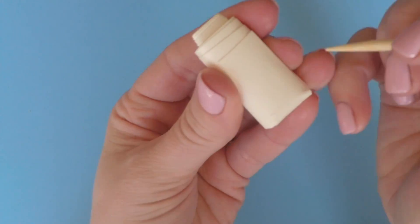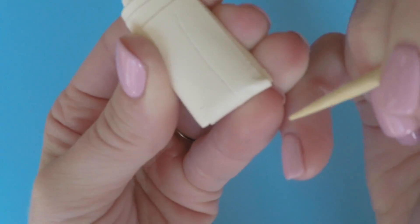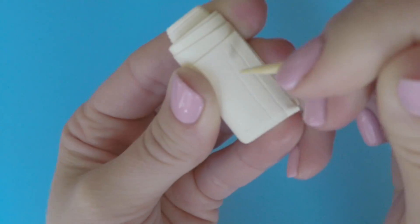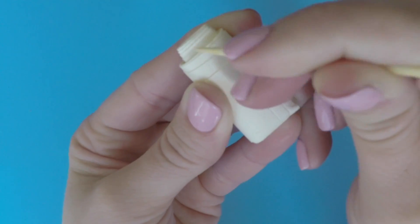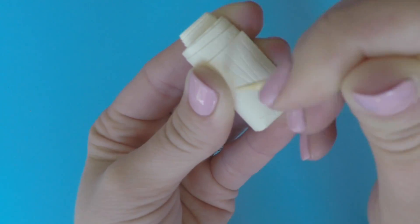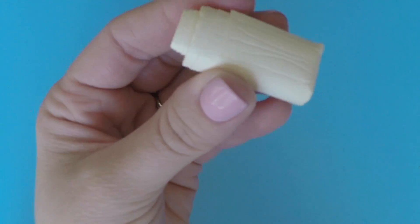And then to make the little indentions for the corn husk, just take your toothpick and apply the lines right in the paper. You'll have to push hard so you can get those lines. And that's it.